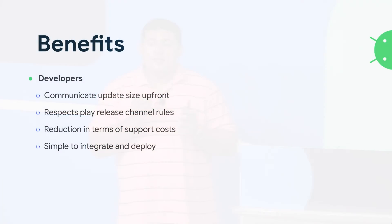From a developer's perspective, you're communicating the update size up front — a factor people use to decide whether to update immediately. It also respects all Play distribution rules, meaning if you're rolling out to a small percentage of users in a certain channel, only those users in that bucket will receive these updates. This was not possible with many libraries that used something like remote config to show the dialogue. It also means that because users are updating faster, there are fewer versions of your code supported in production, thereby reducing support costs.